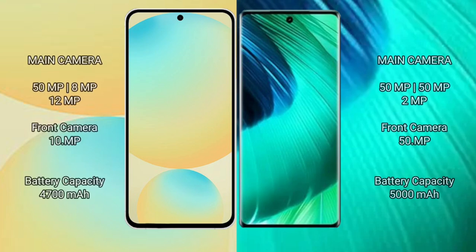Samsung Galaxy S24 FE features a triple rear camera setup: 50MP plus 8MP plus 12MP, and a 10MP front camera. Vov30 also features a triple rear camera setup: 50MP plus 15MP plus 2MP.